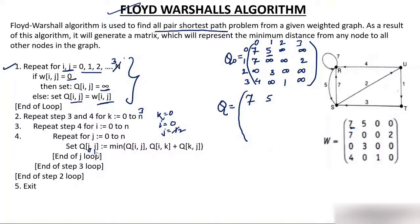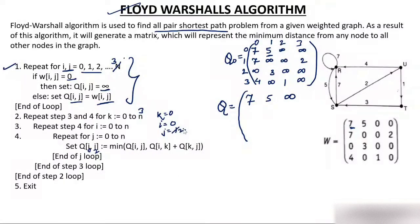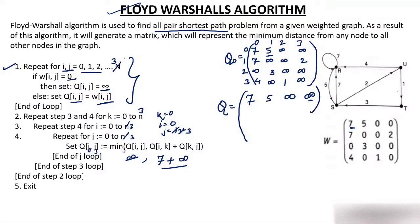j increments to 3. I need Q[0][3], which is infinity. Q[0][0] + Q[0][3] = 7 + infinity = infinity. Minimum is infinity, so I put infinity. After j completes all values 0 to 3, the j loop terminates. Then i increments to 1 and j reinitializes to 0. Now i is 1, k is still 0, j is 0, so I need Q[1][0].